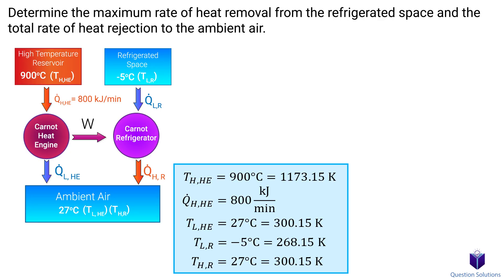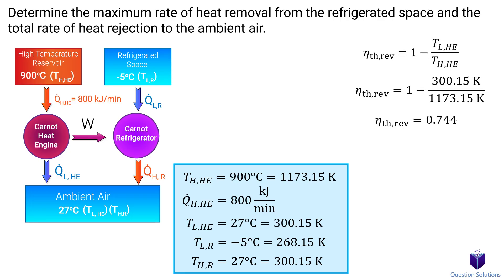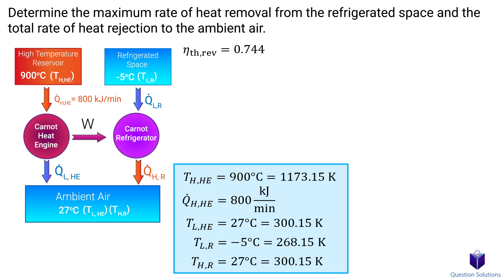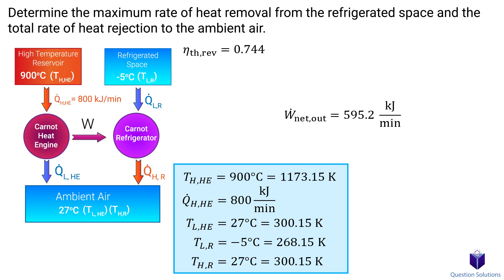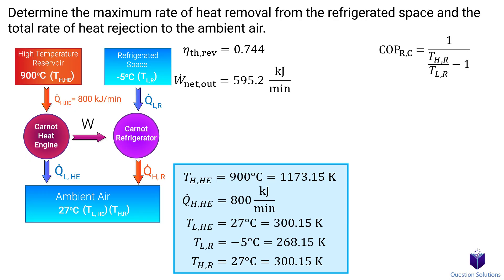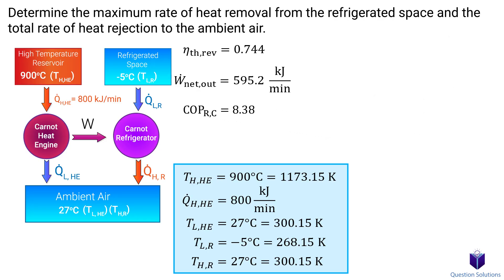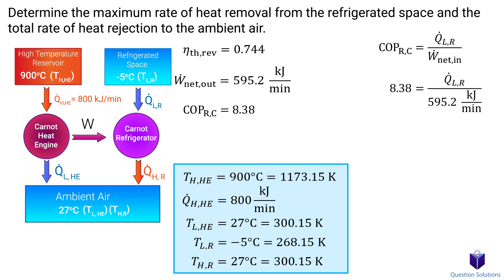Let's tackle this problem by first figuring out the power output of this heat engine. To do that, we need to know the efficiency of this engine. We can use the efficiency of a Carnot engine equation. Let's plug our values in, giving us the thermal efficiency. Now we can figure out the power output of the heat engine using this equation. This power output value is the power input for our refrigerator. Now we switch to the Carnot refrigerator and figure out its COP. Keep in mind that TH for the refrigerator is the ambient temperature and TL is negative 5 degrees Celsius. Let's plug our values in and solve. Now that we have the COP, we can use that to figure out the rate of heat removal from the refrigerated space using this equation. Remember, the power output of our heat engine is the power input of our refrigerator.